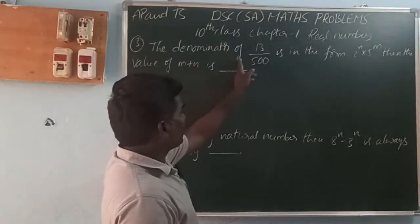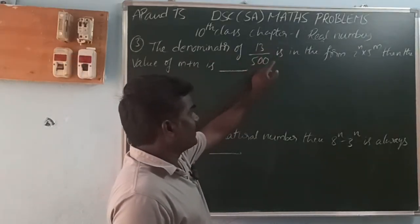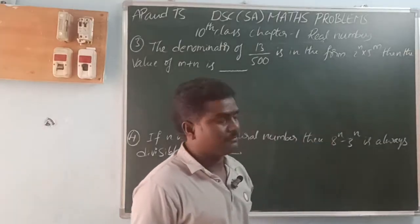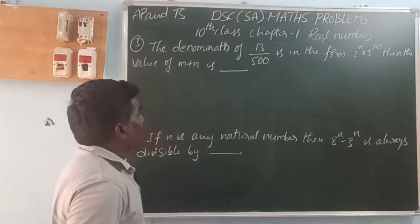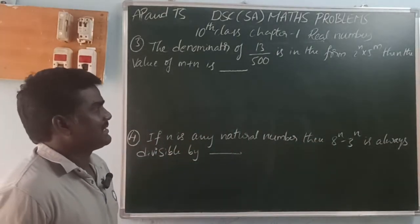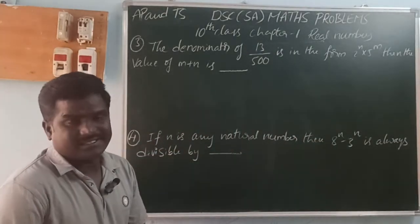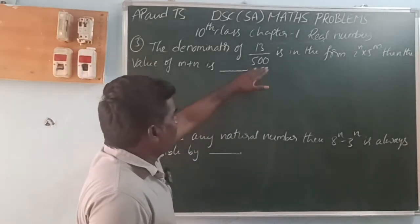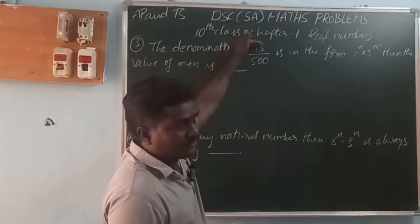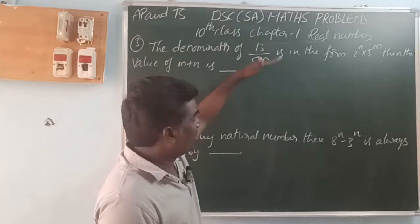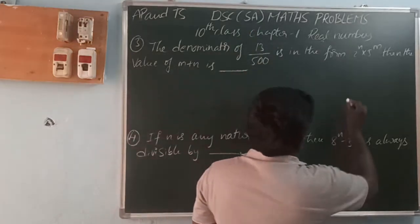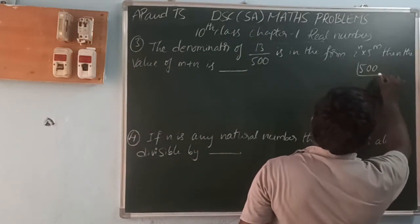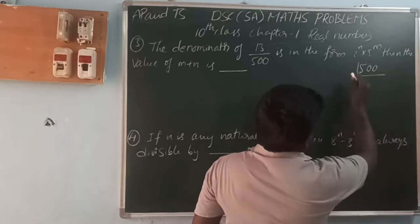Next: the denominator of 13/500 is in the form 2 power n times 5 power m. Then the value of m plus n is? Here the denominator is 500. Let's do the prime factorization of 500.